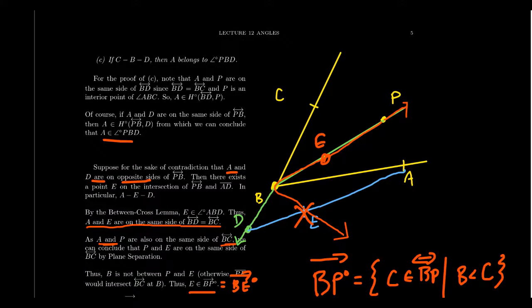That finishes this proposition and brings us to the end of this lecture. This proposition we just proved in three parts was very technical, but it takes care of all the hard work needed for ordered geometry. All these intuitive ideas about interiors of angles and rays have now been established. In the next lecture, we will prove the famous crossbar theorem, one of the most important results in ordered geometry, for which we just laid the groundwork.